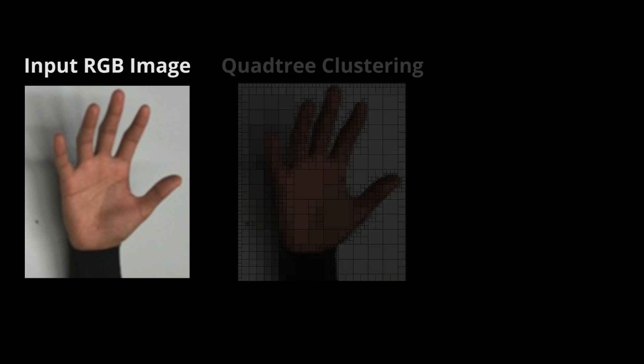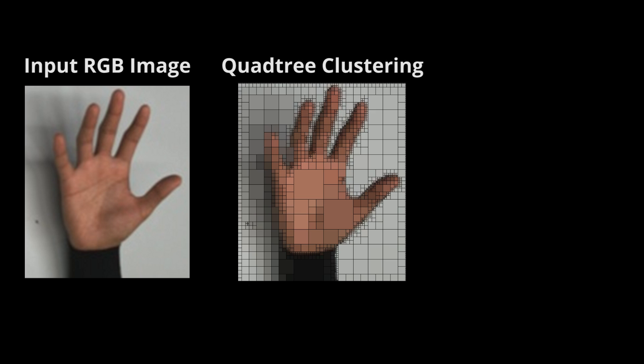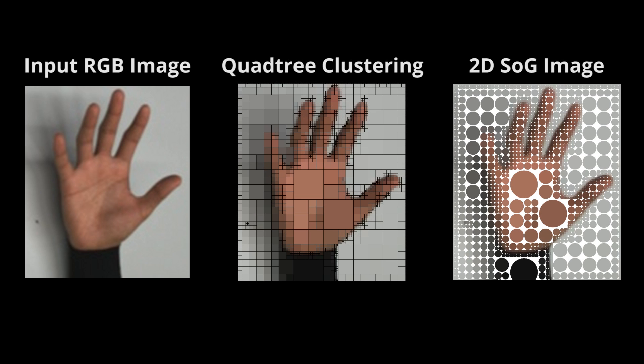We approximate the input RGB images using colour-based quadtree clustering to obtain a sum of 2D isotropic gaussians representation.